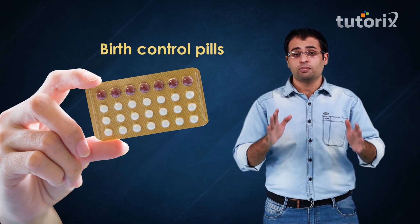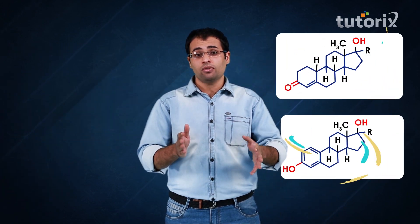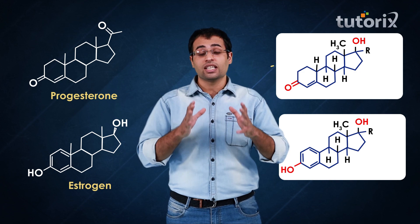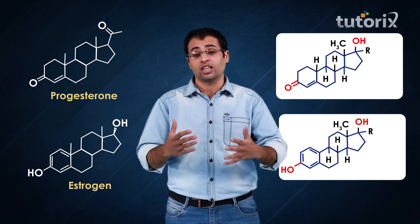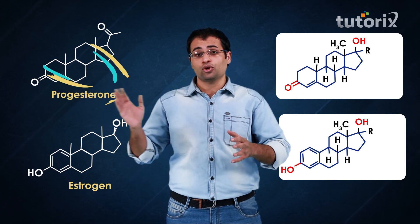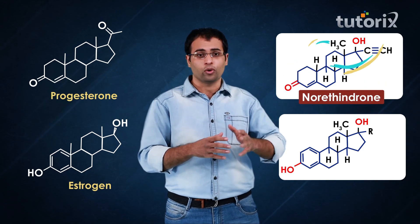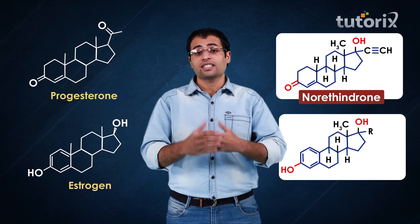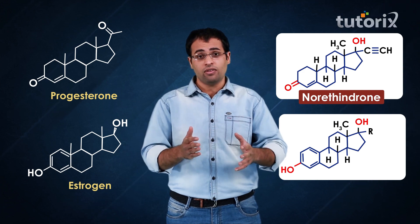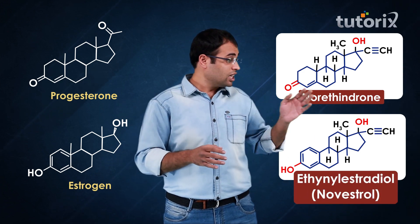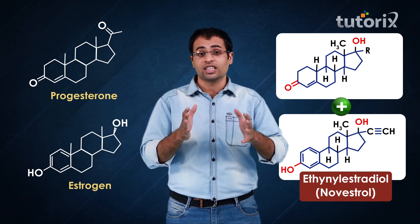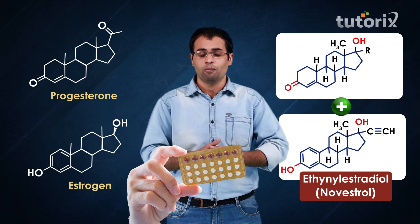Birth control pills mainly consist of a mixture of synthetic derivatives of progesterone and estrogen, because these synthetic derivatives are much more potent and effective than natural progesterone and estrogen. One example of a synthetic progesterone derivative is northindrone, which acts as an anti-fertility drug. Another example is ethinyl estradiol, a synthetic derivative of estrogen, which is used in combination with synthetic progesterone derivatives in birth control pills.